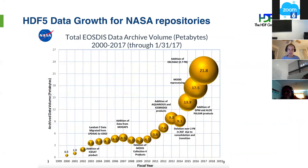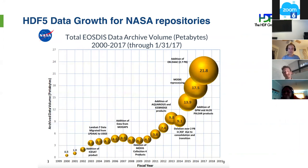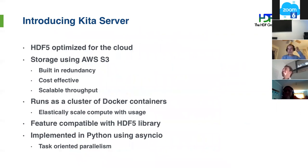Traditionally, NASA has distributed this data through data repositories where people can download files. That was fine when the average file size was around 100 megabytes, but when you have files that are multi-gigabytes and collections that are multi-terabytes, it becomes impractical for users to download all the data to their local system. So NASA is looking at storing data in the cloud.